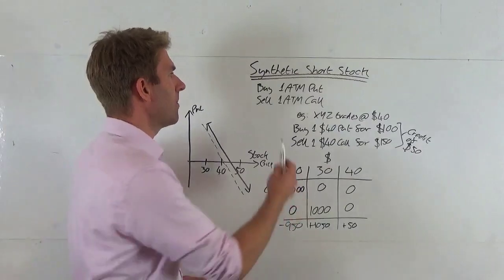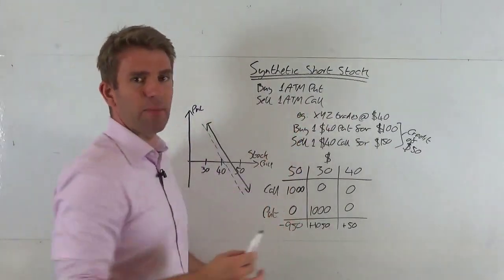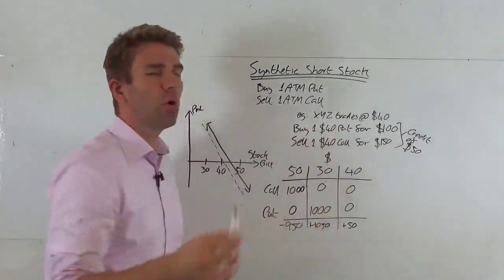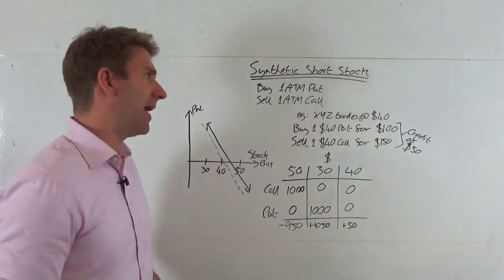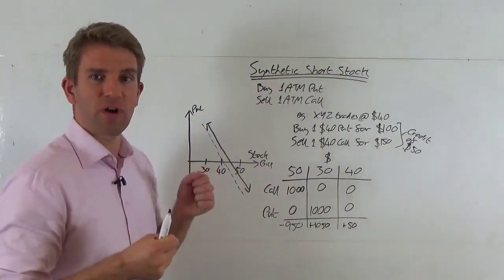To create synthetic short stock, we're basically buying one at the money put but we're selling one at the money call at the same time. There are ways that we can split the strikes and perhaps do this in another video.